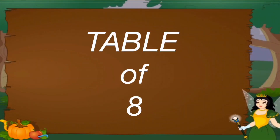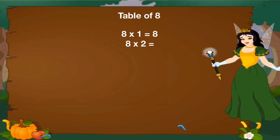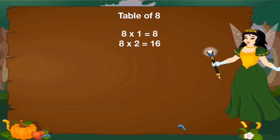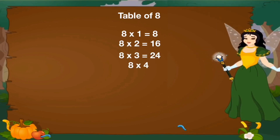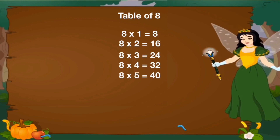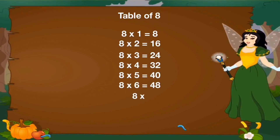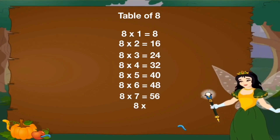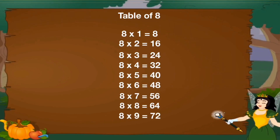Let's revise table of 8. 8 1's are 8, 8 2's are 16, 8 3's are 24, 8 4's are 32, 8 5's are 40, 8 6's are 48, 8 7's are 56, 8 8's are 64, 8 9's are 72, 8 10's are 80.